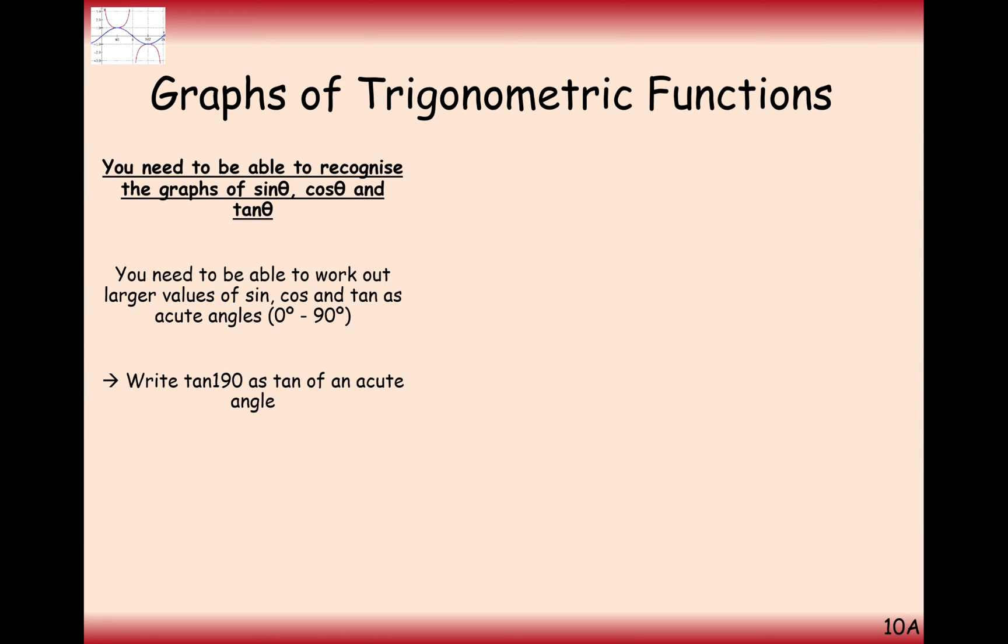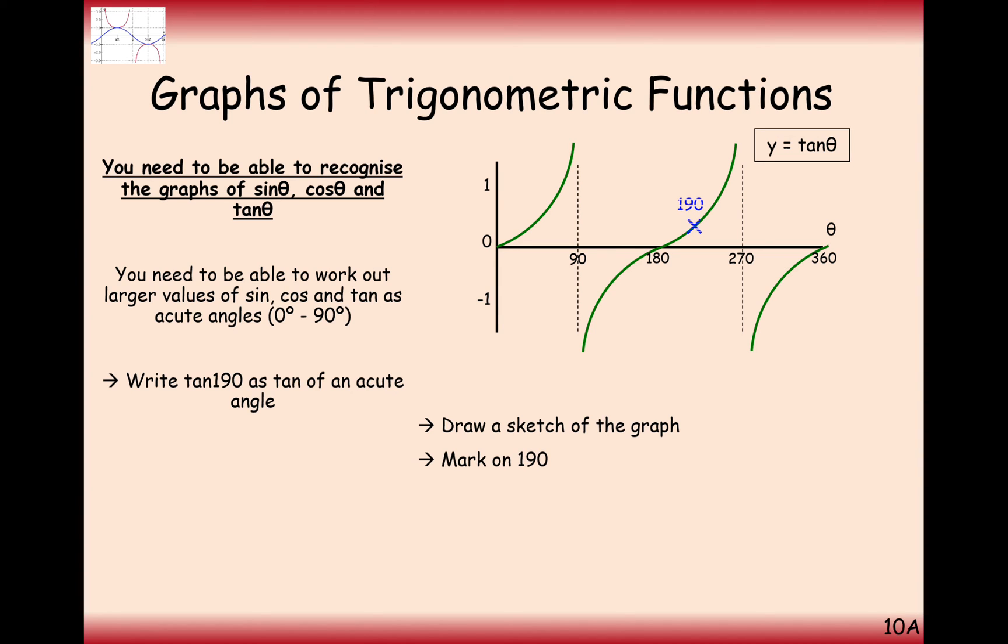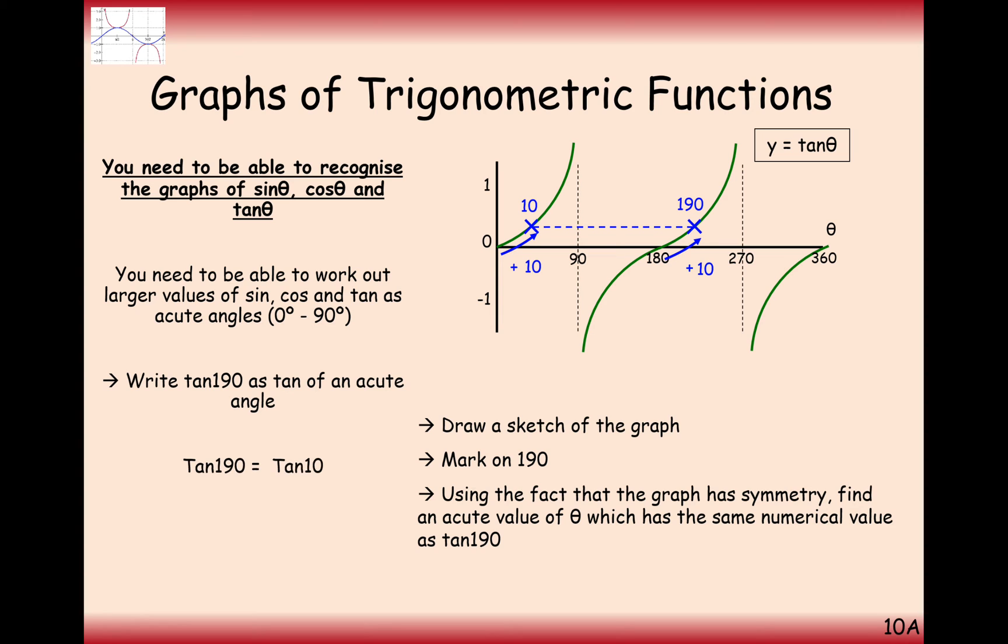A very similar thing can be done for tan. Tan is slightly easier because it just repeats itself every 180 degrees. So if we want to put the marker at 190 to move back to an acute angle, we move back 180, so we get 10 degrees. In this case here, tan of 190 is going to equal tan of 10 degrees.